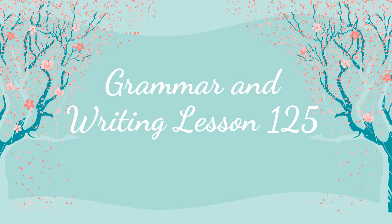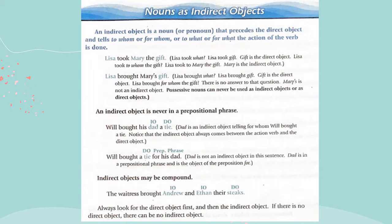Hello, welcome to Grammar and Writing Lesson 25. Today we're talking about nouns as indirect objects. We've talked about them as complements — how they complete a sentence. You have your subject, your verb, and then your complement. We've talked about how they can be a predicate nominative, how they can be a direct object. So now let's talk about them as indirect objects.